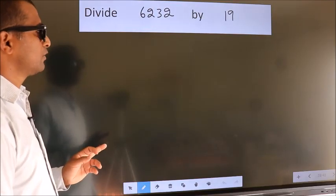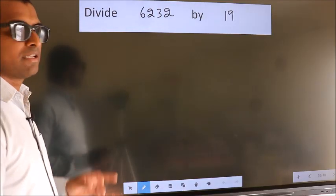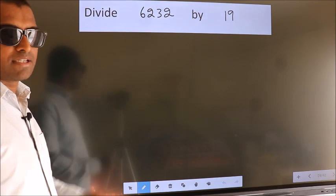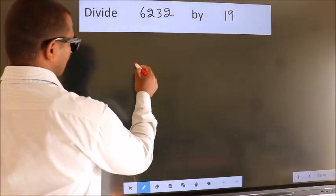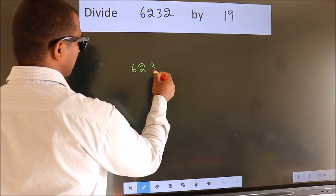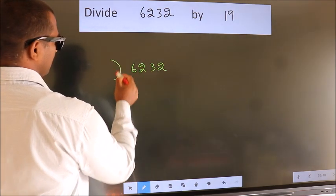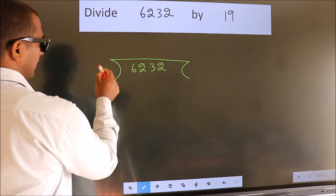Divide 6232 by 19. To do this division, we should frame it in this way. 6232 here, 19 here.